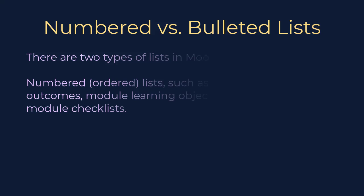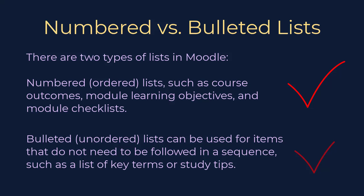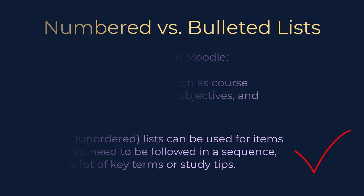Numbered vs. Bulleted Lists. There are two types of lists in Moodle: a numbered or ordered list, and a bulleted or unordered list. Numbered lists should be used to list items that follow a sequential order or should be read or completed in a specific order — this could include course outcomes, module-level learning objectives, and module checklists. Bulleted lists should be used for items that do not need to be followed in a sequence, such as a list of key terms or study tips.